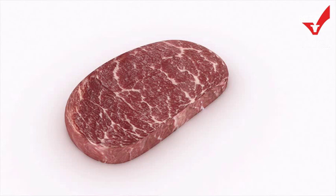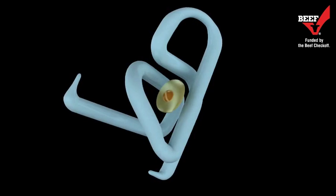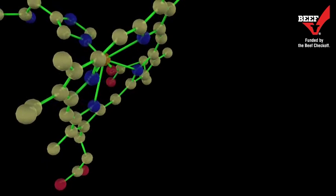Deoxymyoglobin is responsible for the purplish-red appearance of uncut, vacuum-packaged, and/or meat interior to the surface of steaks and roasts, where little oxygen is present. This form exists in a ferrous state with no attached ligands.